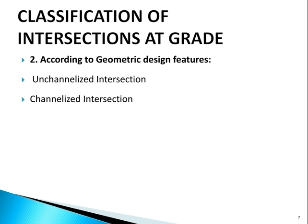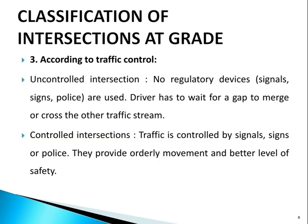According to geometric design features, there are channelized and unchannelized intersections. According to traffic control: uncontrolled intersections use no regulatory devices — drivers must wait for a gap to merge or cross. Controlled intersections use signals, signs, or police to provide orderly movement and better safety.